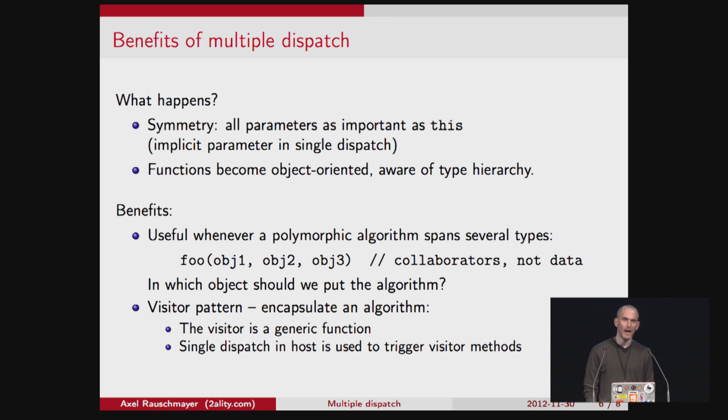What are the benefits? Why do you do that? What's good about it? So what actually happens is you get more symmetry. Normally, the implicit parameter 'this' is more powerful than the other explicit parameters when you have single dispatch, like in JavaScript. So that's one of the properties of multiple dispatch.